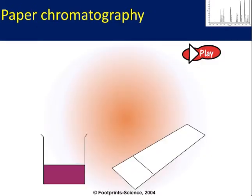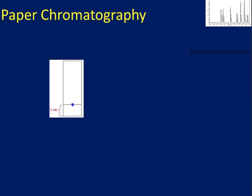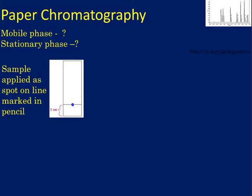How do we apply a sample? Your sample is applied as a spot on a line marked in pencil. The reason you use pencil is that it won't dissolve in your solvent, so it won't interfere with your result. You would blow-dry your spot and reapply it — what you want is a really small, concentrated spot of the color.